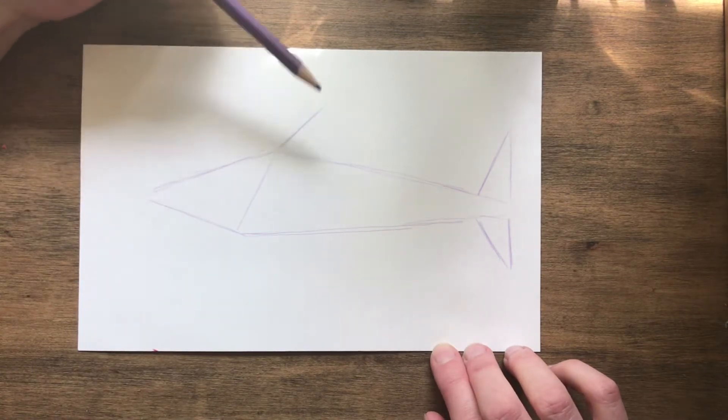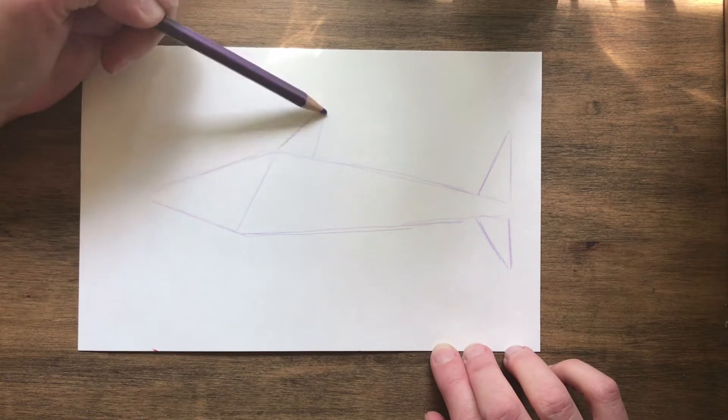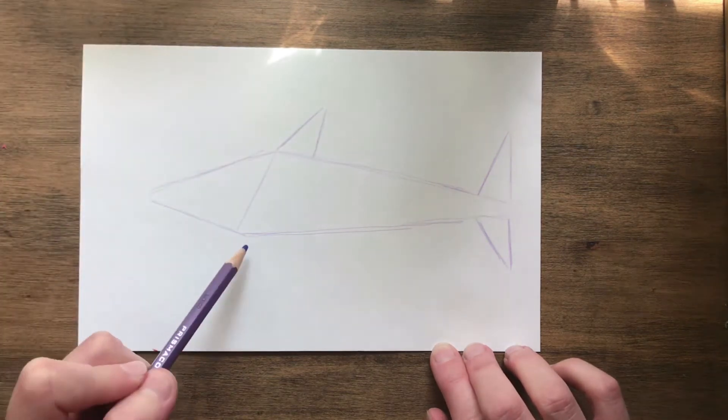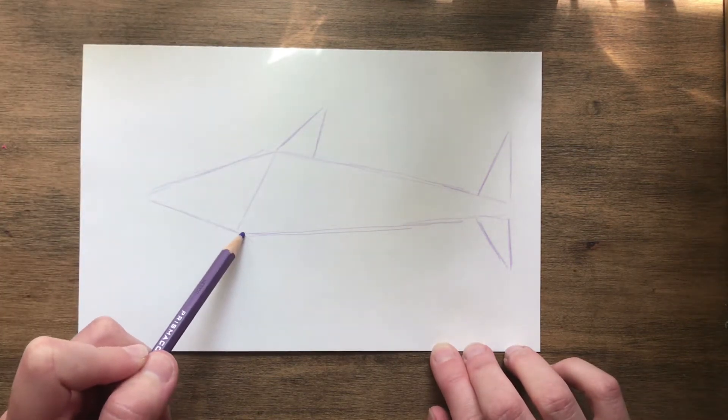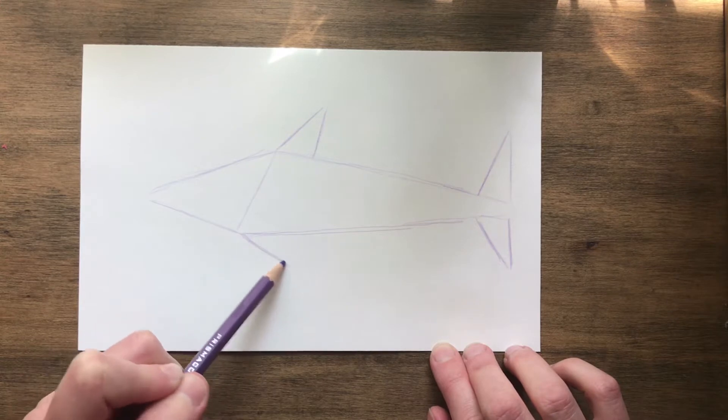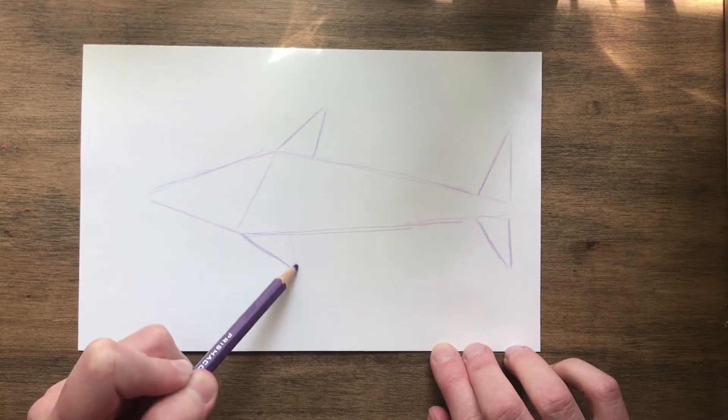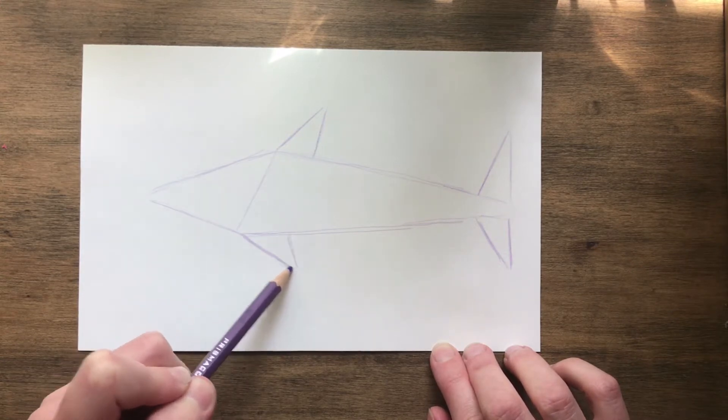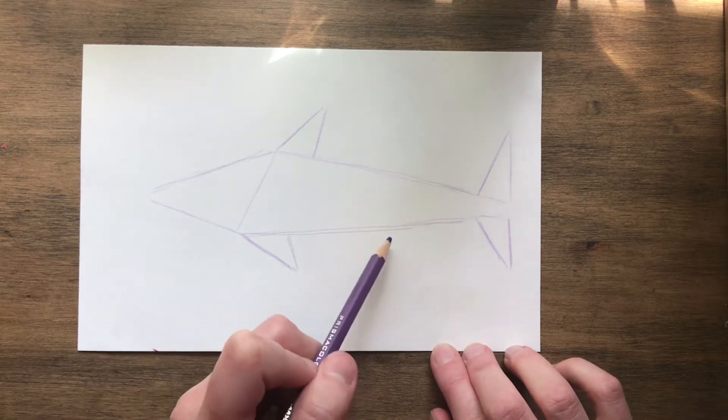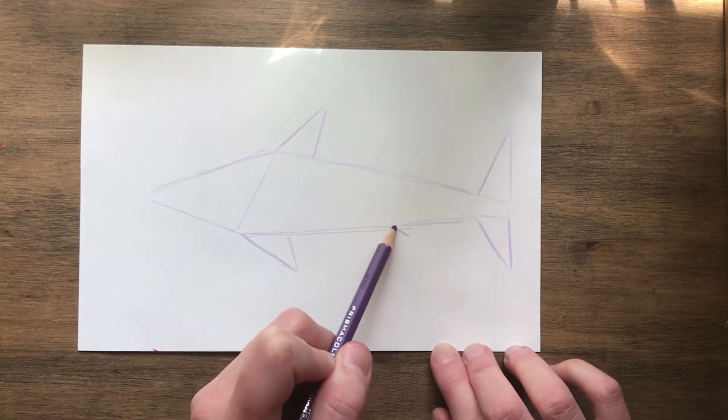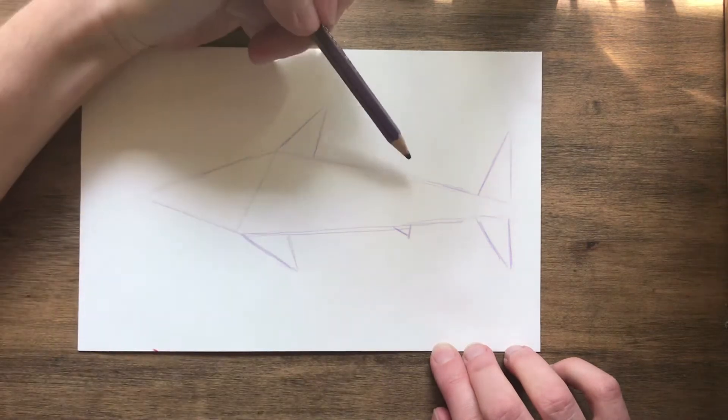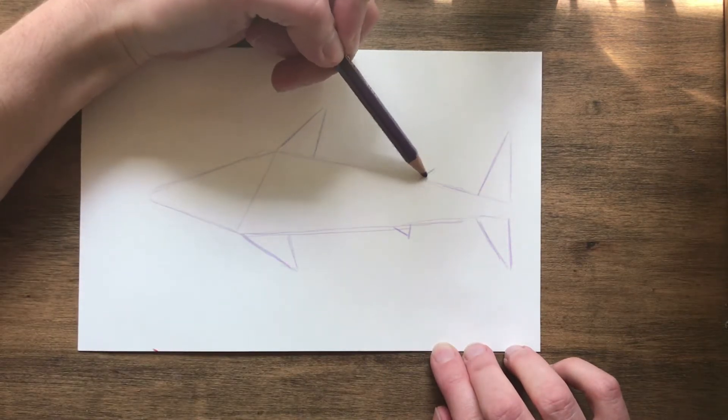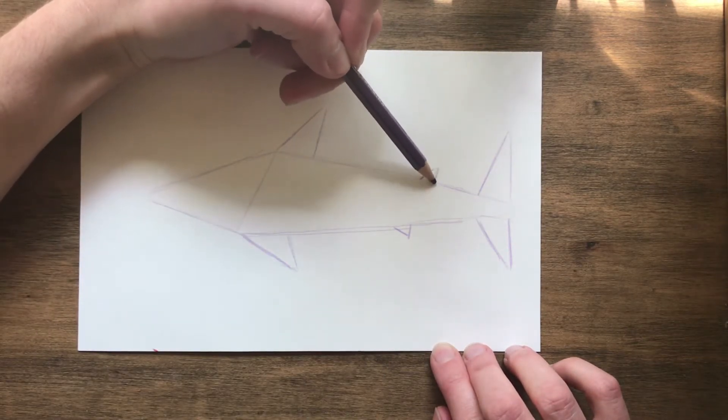Now on the top of the shark's body you are going to draw another triangle coming off of that line. And then one on the bottom too that kind of angles back a little bit. And then one little one right here. And then another little one above that but a little farther back.